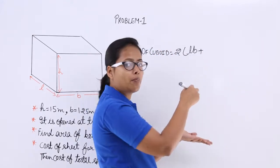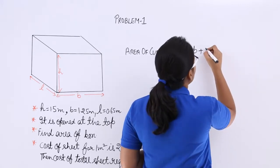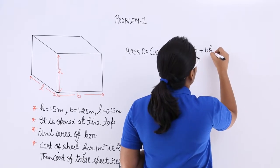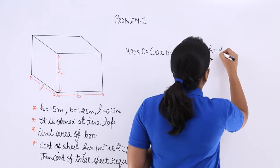There are two which is at bottom and at the top and there is side area which is B into H and there is front area which is H into L.